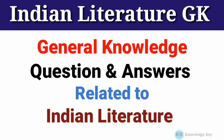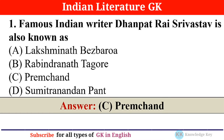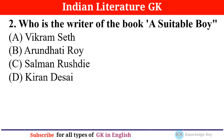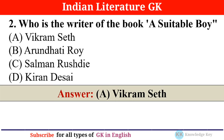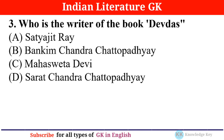Question number one: Famous Indian writer Dhanpat Rai Srivastava is also known as — answer C: Premchand. Question number two: Who is the writer of the book 'A Suitable Boy'? — answer A: Vikram Seth.